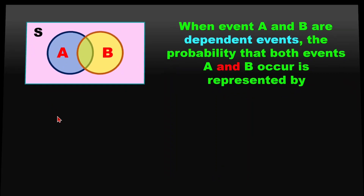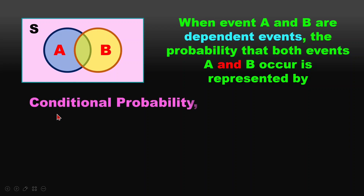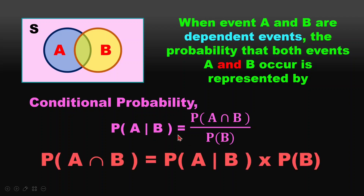There is another case where event A and event B are dependent events. The probability that both event A and event B occur requires the conditional probability formula. To get the probability of A and B in the dependent case, we will need this formula.